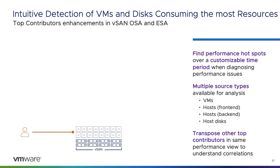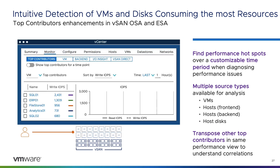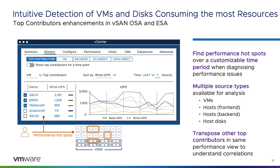First introduced in vSAN 7 Update 2, the Top Contributors view provides an easy way to determine which VMs contribute the most demand on cluster resources. In vSAN 8 Update 2, we've made the tool even better — customers can now find performance hotspots not only at any given point in time, but over customizable periods of time. Even more helpful is the ability to transpose other top contributors in the same performance view, whether for IOPS, throughput, or latency. This highly customizable view lets administrators quickly evaluate VMs placing the most demand on the cluster and identify disproportionate resource consumption across hosts.